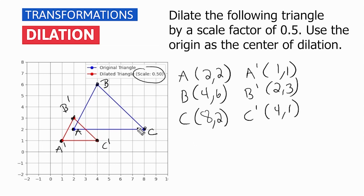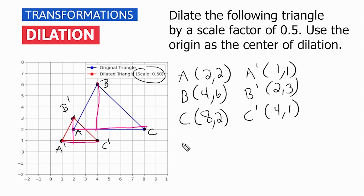If we compare their dimensions — like the base compared to the new base — we went from 6 to 3, and we went from a height of 4 to 2. So we can see that the one-dimensional measures were also dilated by a scale factor of 0.5 or 1 half. In review, when performing a dilation on the coordinate plane using the origin as the center of dilation, all you have to do is write down the original coordinates and multiply each value by the given scale factor, and that will tell you precisely where the new figure should be plotted.